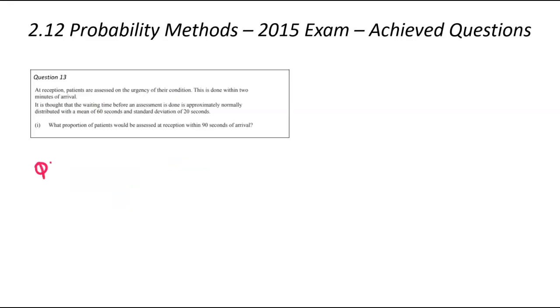We're now looking at question number 13. At reception, patients are assessed on the urgency of their condition, normally done within two minutes of arrival. It's thought that the waiting time is approximately normally distributed. Again, bang, got to think normal distribution, a mean of 60 and a standard deviation of 20. What proportion would be assessed within 90 seconds?